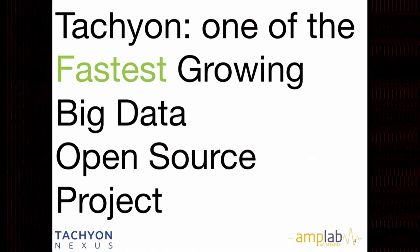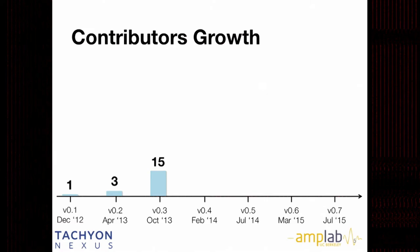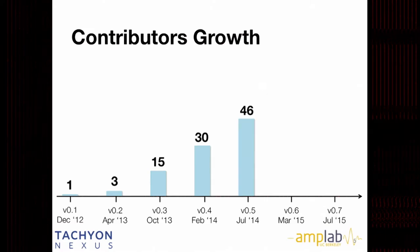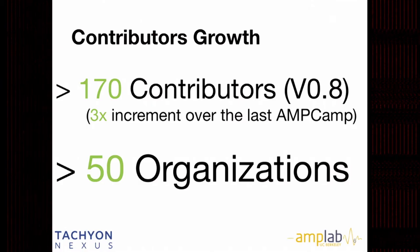Tachyon is now one of the fastest-growing big data open-source projects. There are many metrics — just to illustrate one: contributor growth. We had one contributor at version 0.1, then a 300% increase to three contributors for 0.2, then 15, 30, 46, 70, and 111 for the 0.7 release. In the latest release we have more than 170 contributors — more than three times the number from last year — and more than 50 contributing organizations.